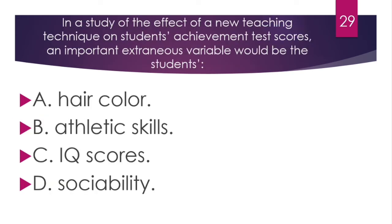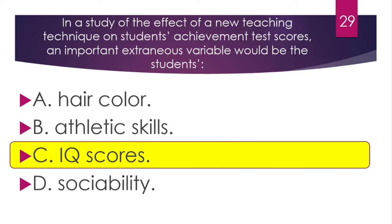Question number 29. In a study of the effect of a new teaching technique on students' achievement test scores, an important extraneous variable would be the students' IQ scores. Achievement tests measure what students have learned, while IQ tests measure intelligence. The students' IQ scores would be an extraneous variable because differences in intelligence could affect achievement test performance independently of the teaching technique.